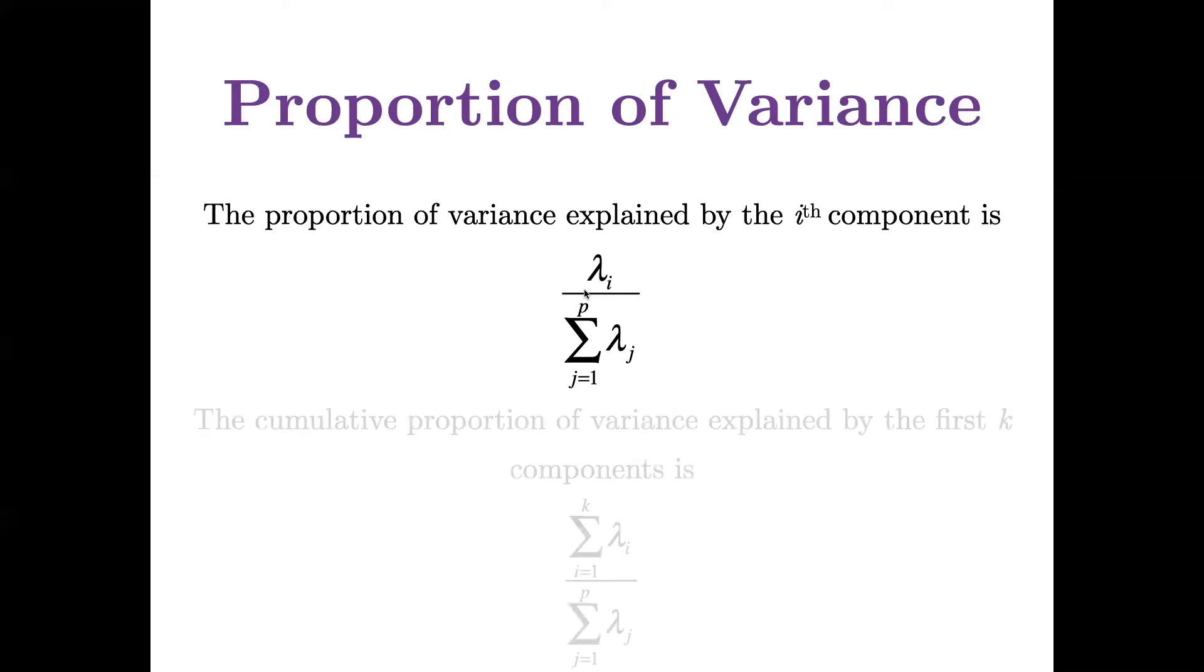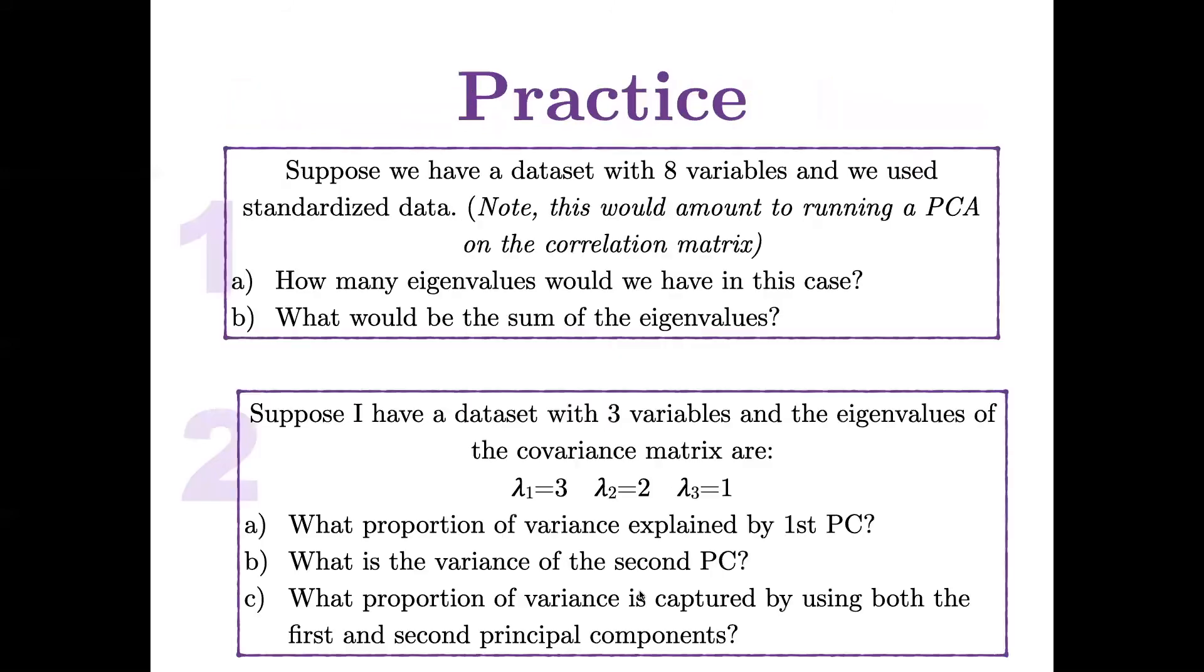And often we're more interested in looking at the cumulative proportion of variance that's explained by, say, the first k components. So I would add up the amount of variance from i equals 1 to k. This would be the total variance explained by the first k components, divided by the total. So let's get some practice with this.